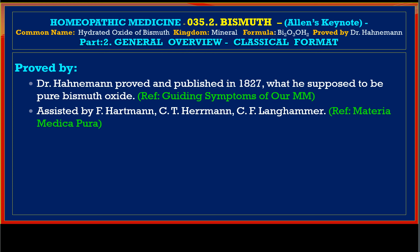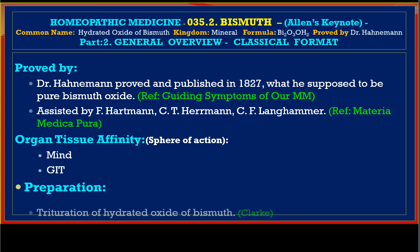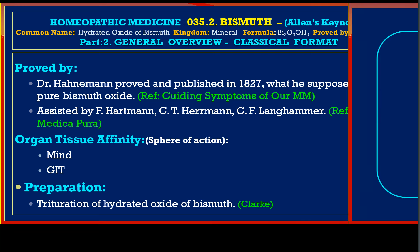Dr. Henneman was assisted by F. Hartman, C.T. Herman, and C.F. Langhammer. The organ and tissue affinity of the remedy is mind and GIT tract. Preparation is trituration of hydrated oxide of bismuth.